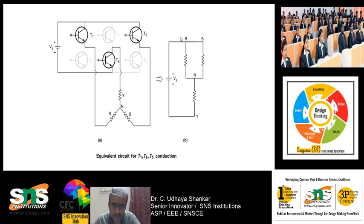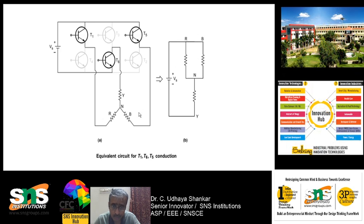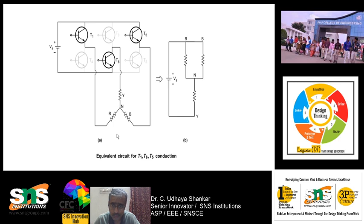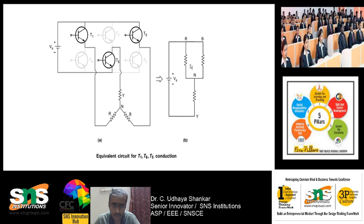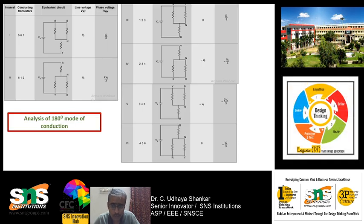To find how the output voltage looks, you need to draw the equivalent circuit for all switching sequences. Let us go one by one. In the first sequence — analysis of 180-degree mode — when transistors 5, 6, and 1 are on, this is the actual equivalent circuit. You calculate the output voltage V_RY. You want to draw the equivalent circuit for all switching sequences and only then can you determine how the output voltage looks.